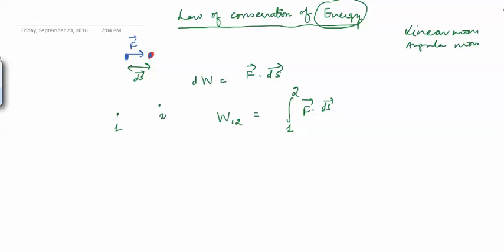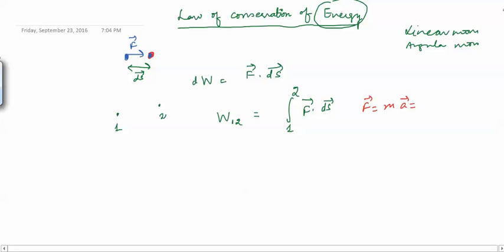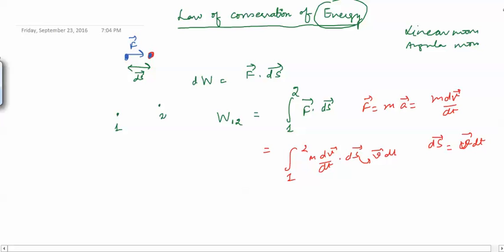Now, F is mass times acceleration, which is dv/dt. So the work integral from 1 to 2 becomes the integral of M(dv/dt)·ds. Now ds is the displacement vector, which equals velocity times dt. So I can replace ds with v·dt, and since M is constant I can take it out, giving me M times the integral of (dv/dt)·v dt.